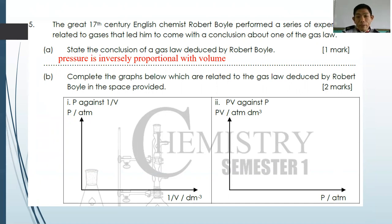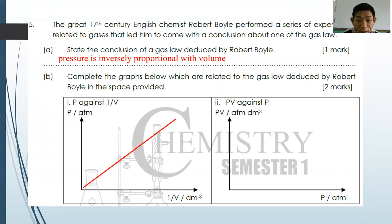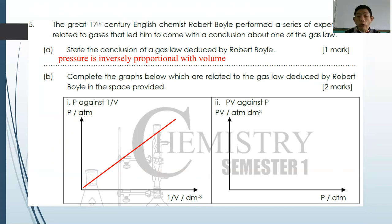Complete the graphs related to Boyle's law. For P against V, it is a negative-gradient hyperbolic curve. For P against 1/V, since PV is constant, it becomes a straight line with a positive gradient. For PV against P, since PV is constant for an ideal gas, no matter how much pressure changes, the product PV remains constant — so the graph is a horizontal straight line.